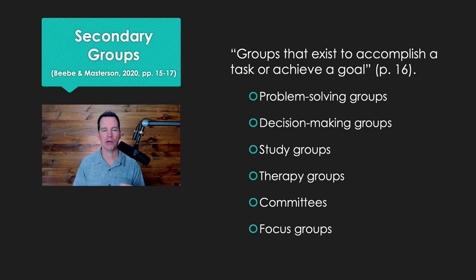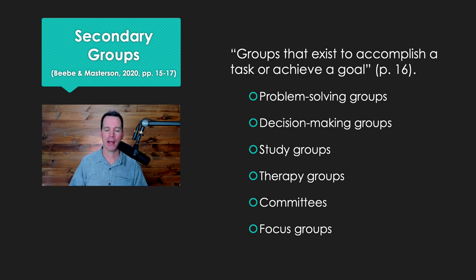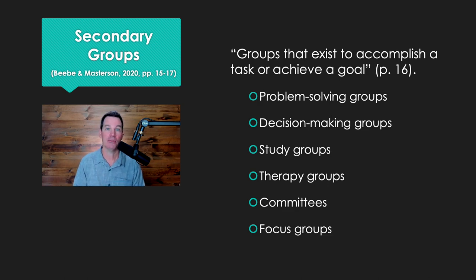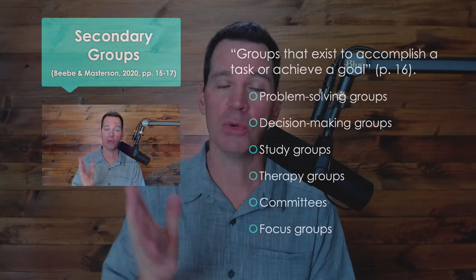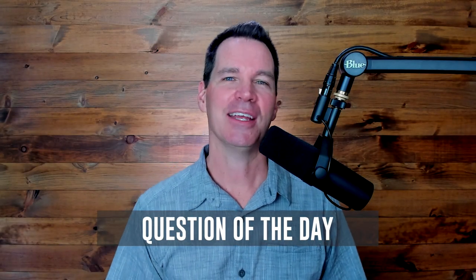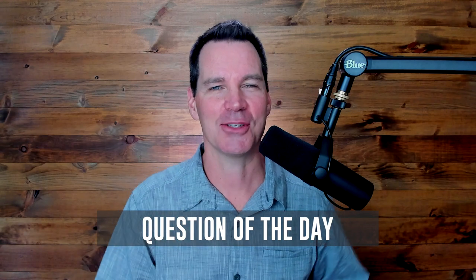So those are some examples of primary groups and secondary groups. What they have in common is that they are groups and they overlap — on the surface they look very similar, and you are probably involved in more than one of these. Question of the day: what primary groups can you identify in your life, and what secondary groups are you currently involved in now, or maybe in the past? I would love to hear your comments in the section below the video.